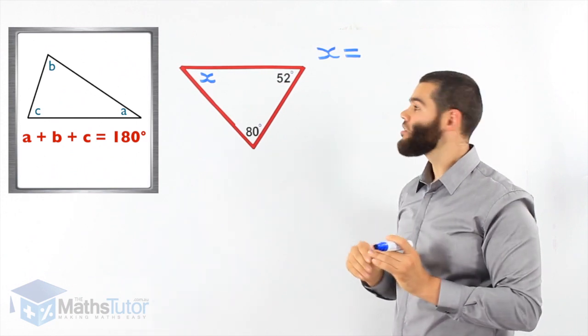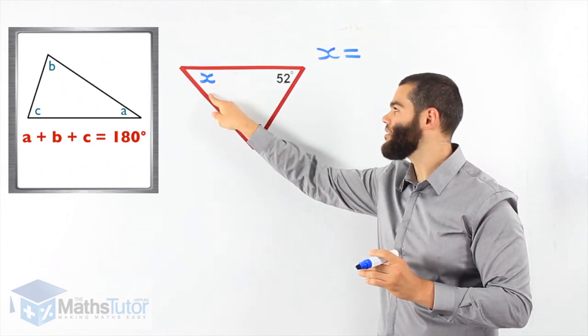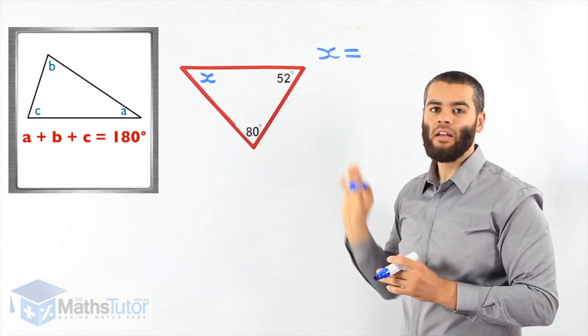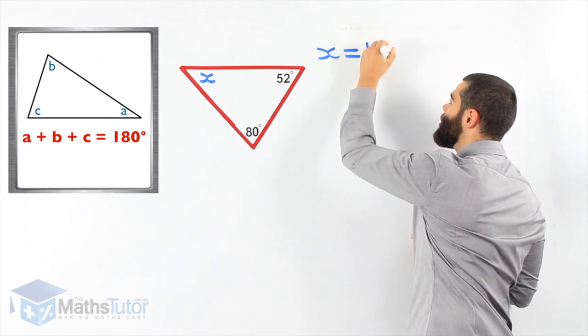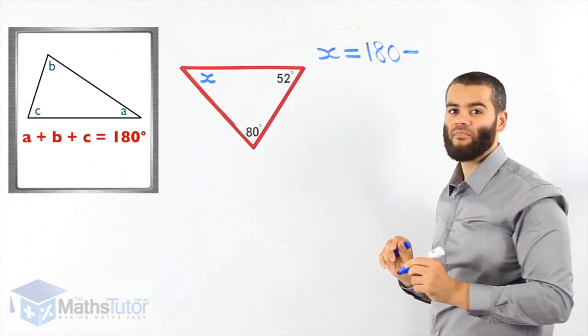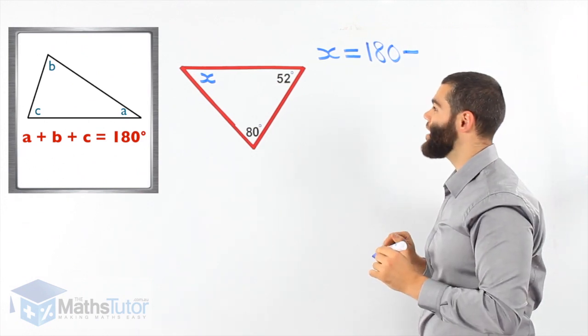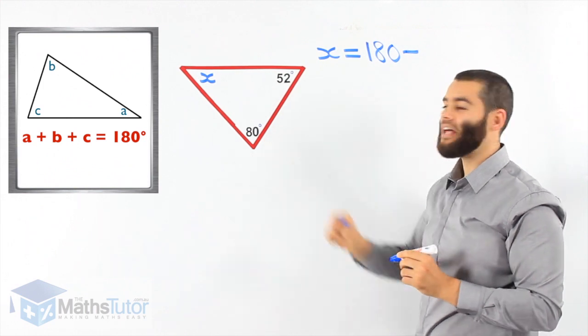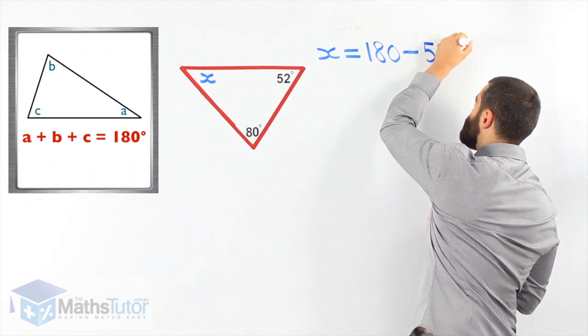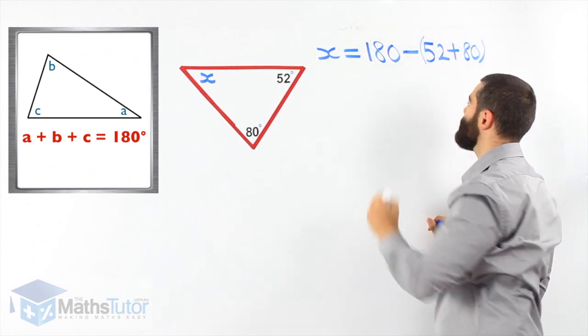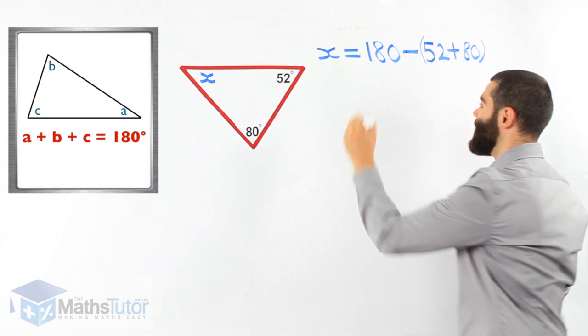So 180, take away 52, take away 80 degrees. We're going to be left with this angle here. Let's do that and work out X. X equals 180 degrees, which is the total in a triangle, minus, what are we going to take away? The other two angles. The other two angles added together. 52 degrees plus 80 degrees. We need to know now and work out X.